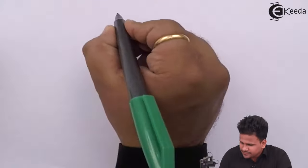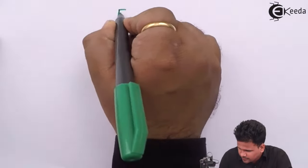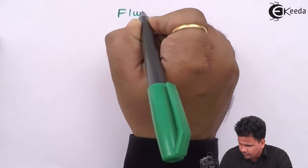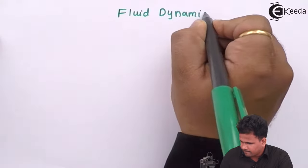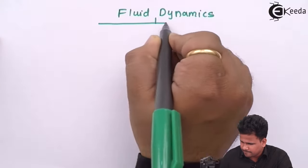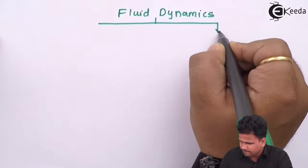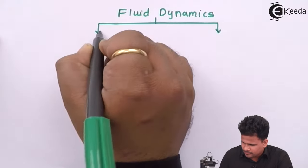Fluid dynamics is a part of fluid mechanics in which the fluid flows from one place to another. During this, it undergoes change in displacement, velocity, as well as acceleration. So fluid dynamics is actually classified into two parts.